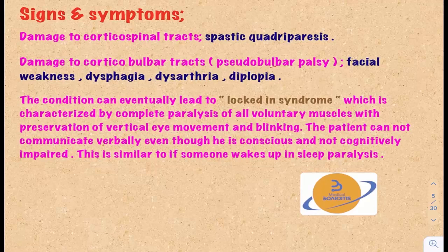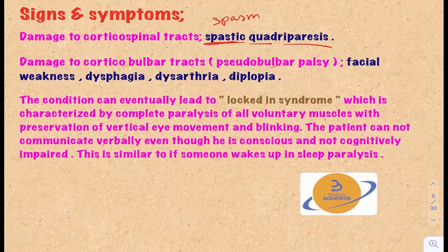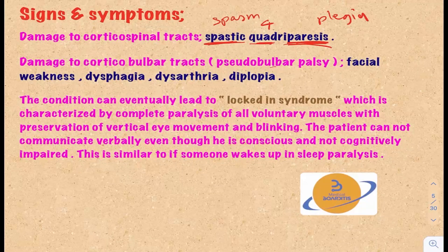Signs and symptoms of central pontine myelinolysis include spastic quadriparesis. Spastic is coming from the word spasm because with upper motor neuron lesion, the muscles become spastic and paralyzed. Quadri means all four limbs, so both upper and lower limbs are paralyzed. Paresis means weakness, in contrast to plegia, which means complete paralysis or complete loss of muscle action, which can also happen in central pontine myelinolysis. And this is all because of damage to the corticospinal tracts.